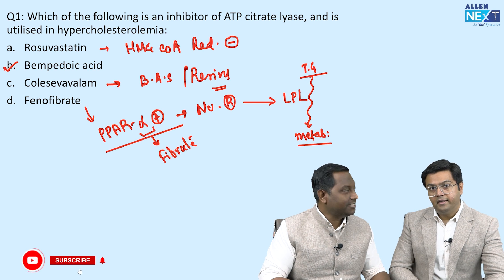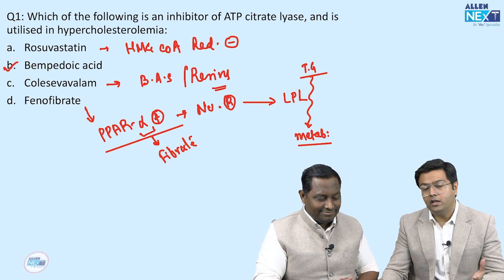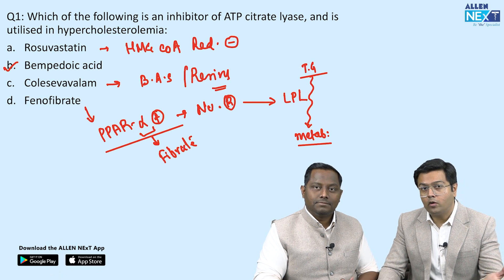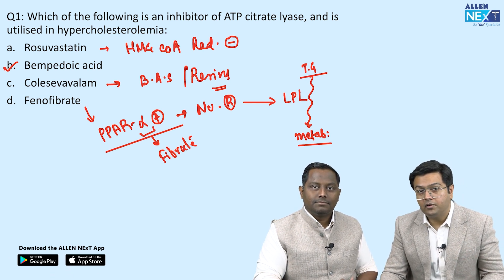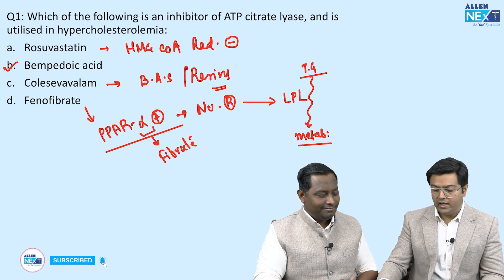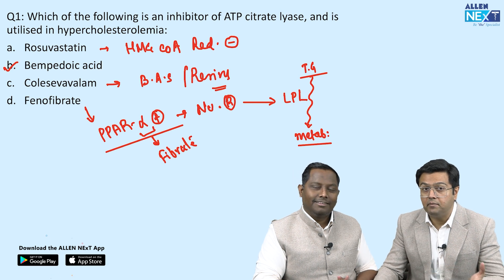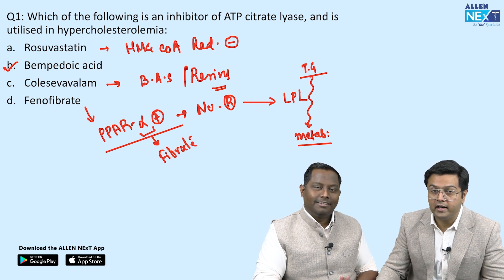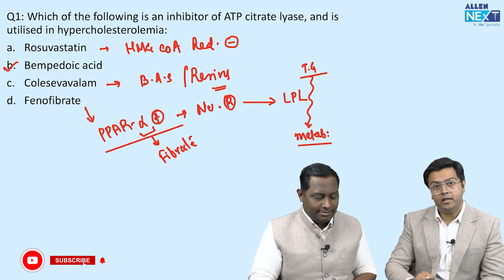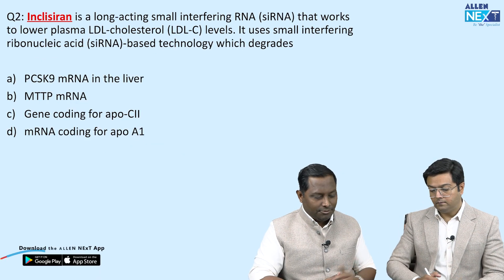One more thing to add: for treatment of hypertriglyceridemia, the best option is omega-3 fatty acids, which are commonly prescribed. They activate triglyceride breakdown and increase beta-oxidation of fatty acids, also acting through the PPAR pathway. Okay, let's move to the next question.